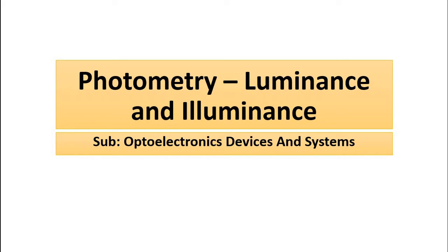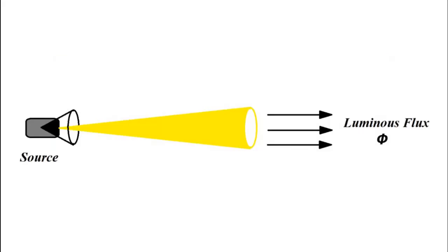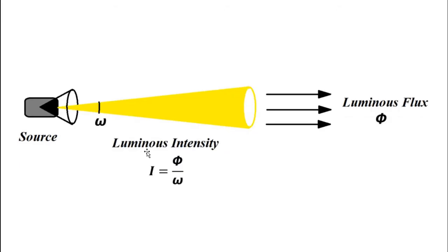We were studying about photometry, which is basically concerned with the visible portion of the electromagnetic spectrum. We discussed luminous flux, which is the total visible power or luminous power emitted from the source in the visible frequency or wavelength range — the visible energy emitted per second, represented by the symbol φ. We also discussed luminous intensity, which is the luminous power emitted per unit solid angle ω from the source, expressed as I = φ/ω. Now in this video we will be discussing about illuminance.